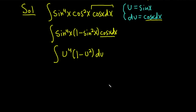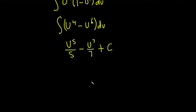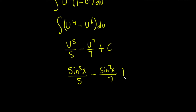Now we can distribute the u to the fourth: u to the fourth times 1 is u to the fourth, minus u to the fourth times u squared, which is u to the sixth, and then our du. When we integrate using the power rule, we add one and divide: u to the fifth over five, minus u to the seventh over seven, plus c. And since u was sine x, this is sine to the fifth power of x over five, minus sine to the seventh power of x over seven, plus c.